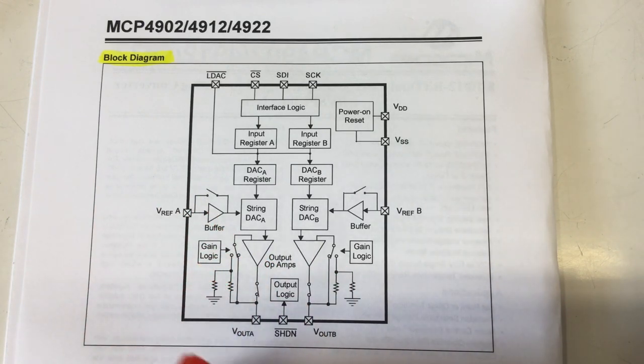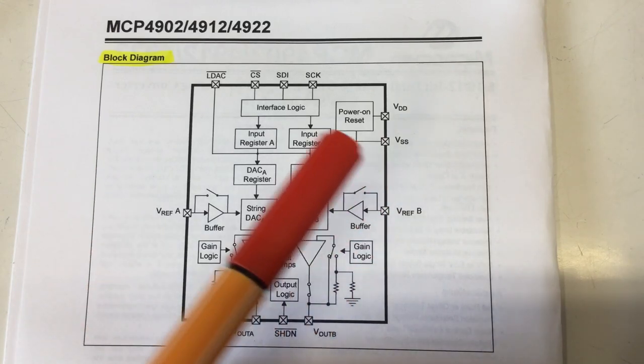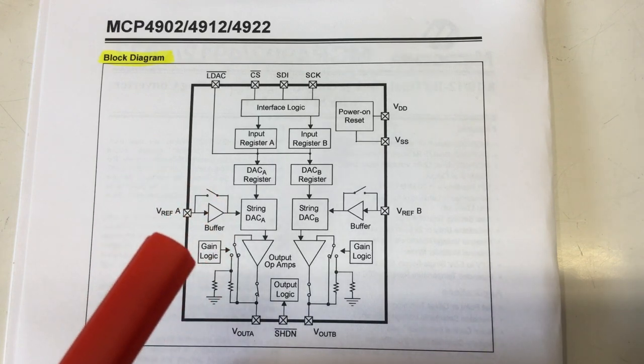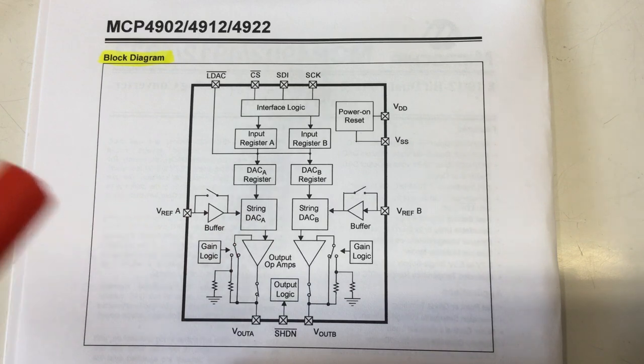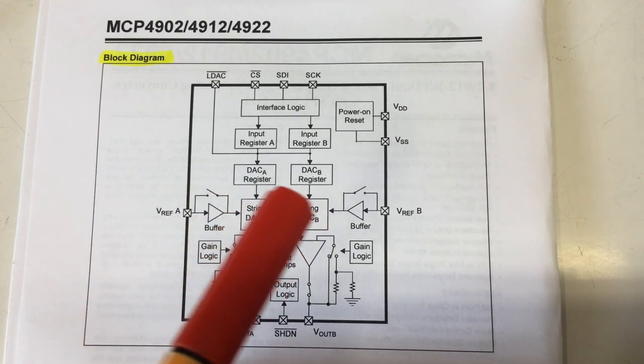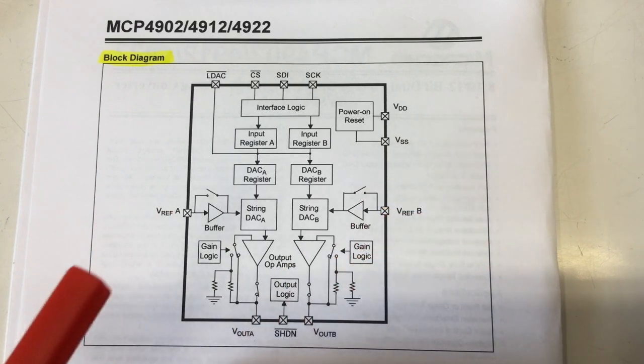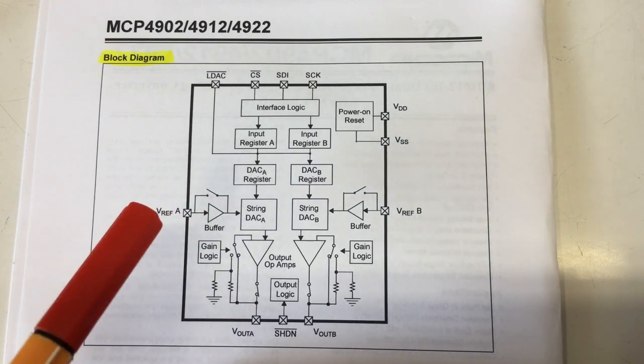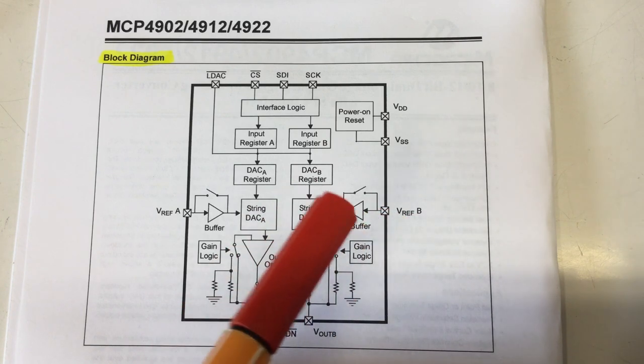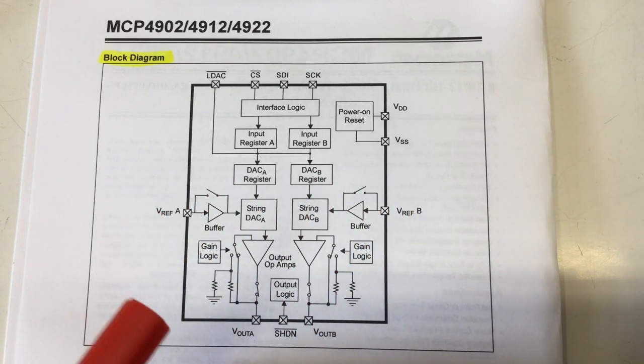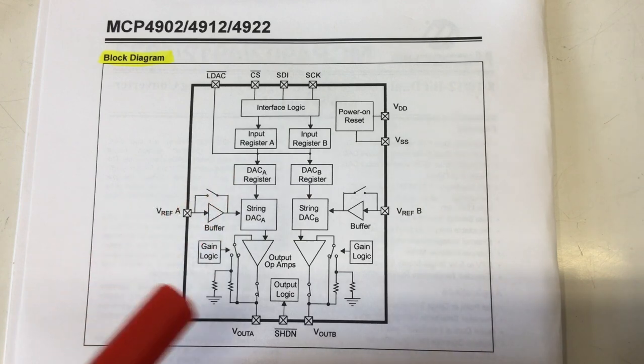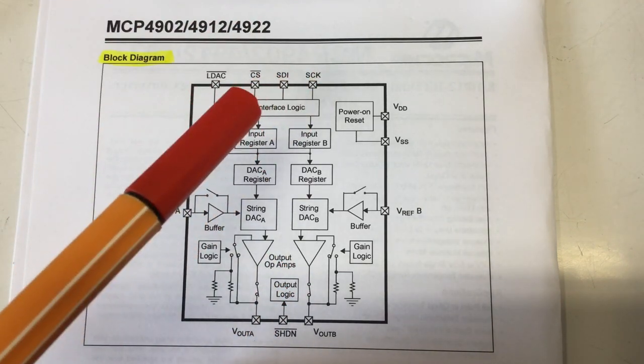In addition, you have a shutdown pin where you can put the whole thing into a power safe mode. What's missing is the voltage references. And you have to supply the reference voltage for the DACs externally. And there are input buffers which can be bypassed for these VREF-A and VREF-B inputs. We'll talk about that a little bit later.